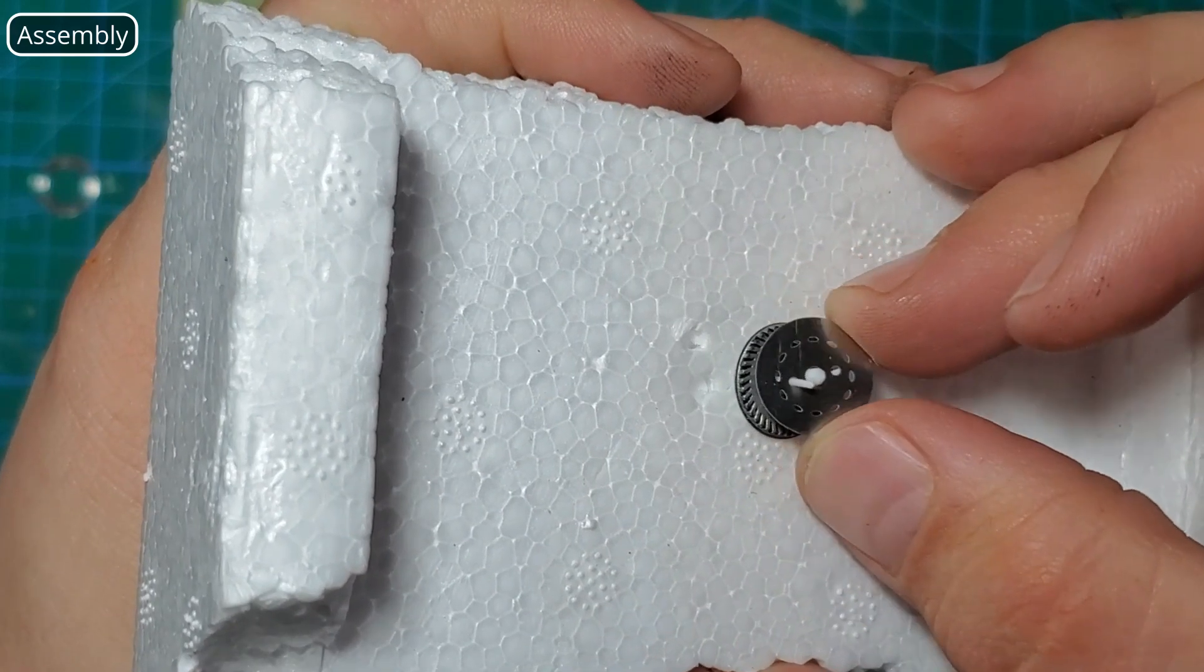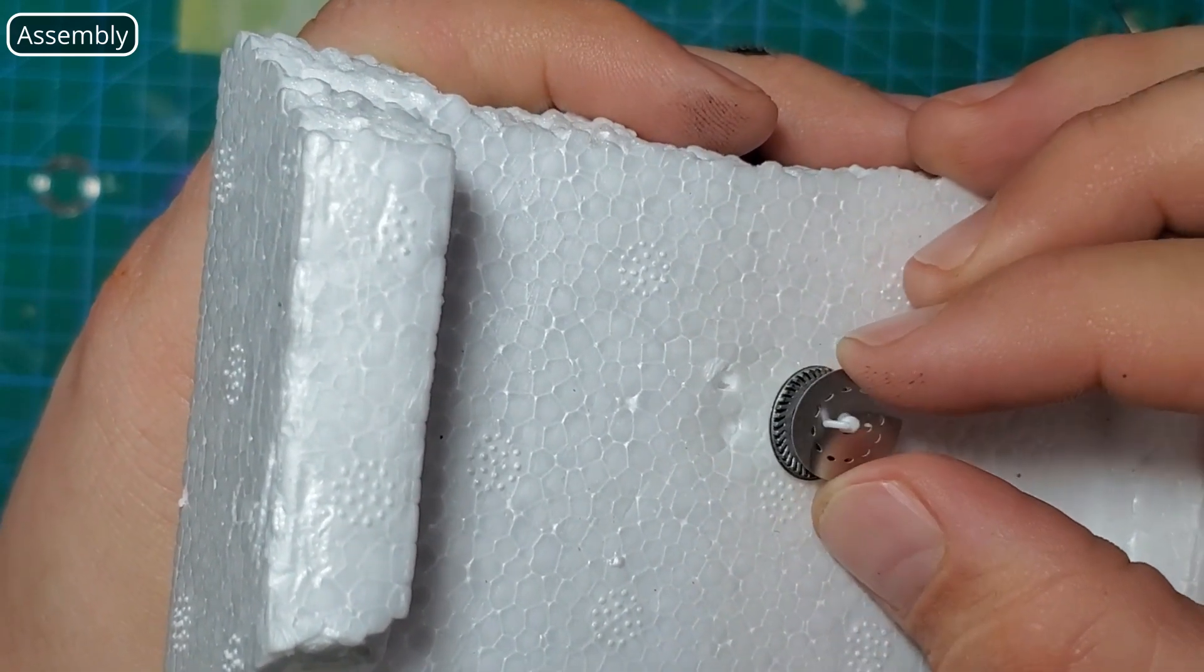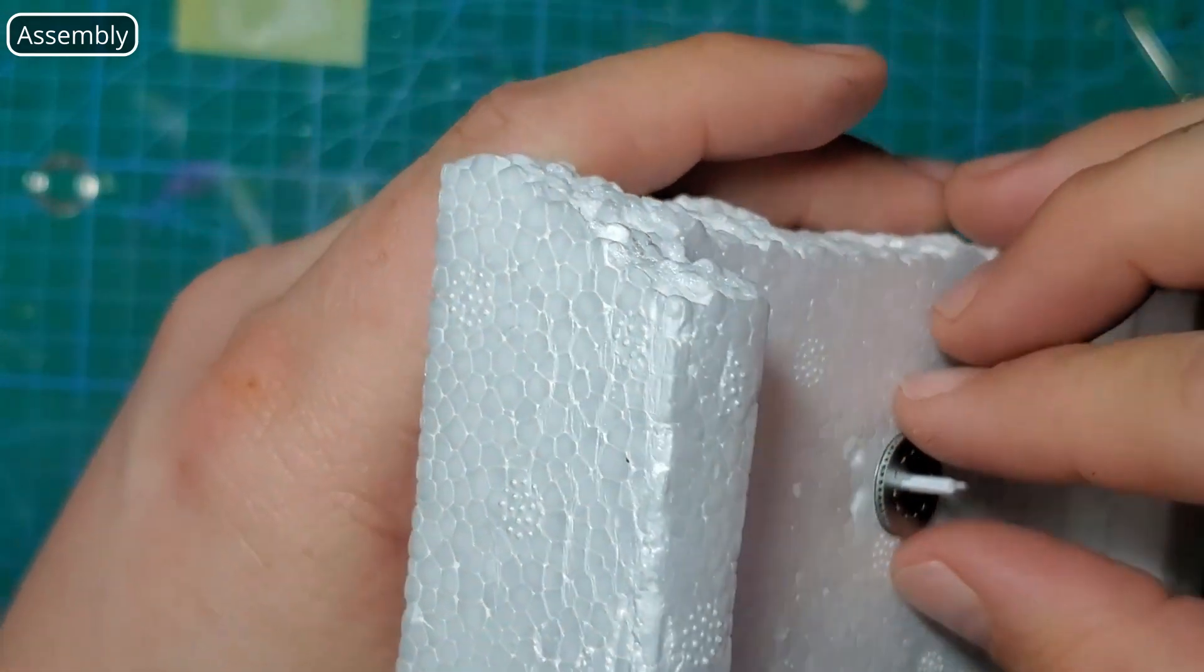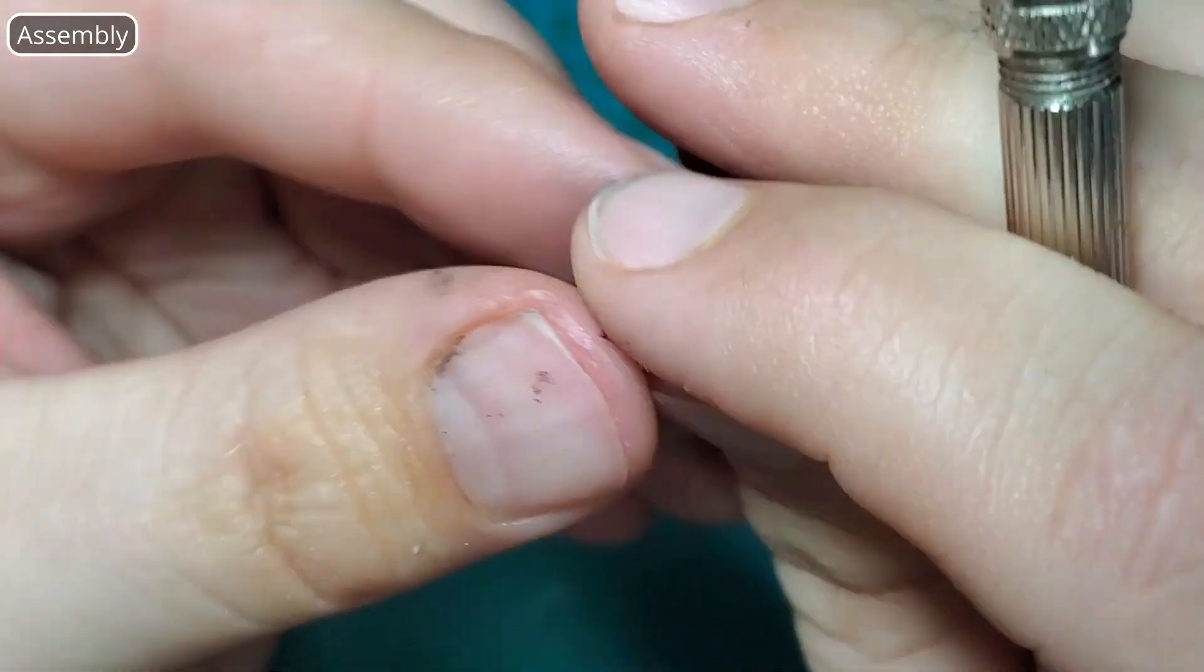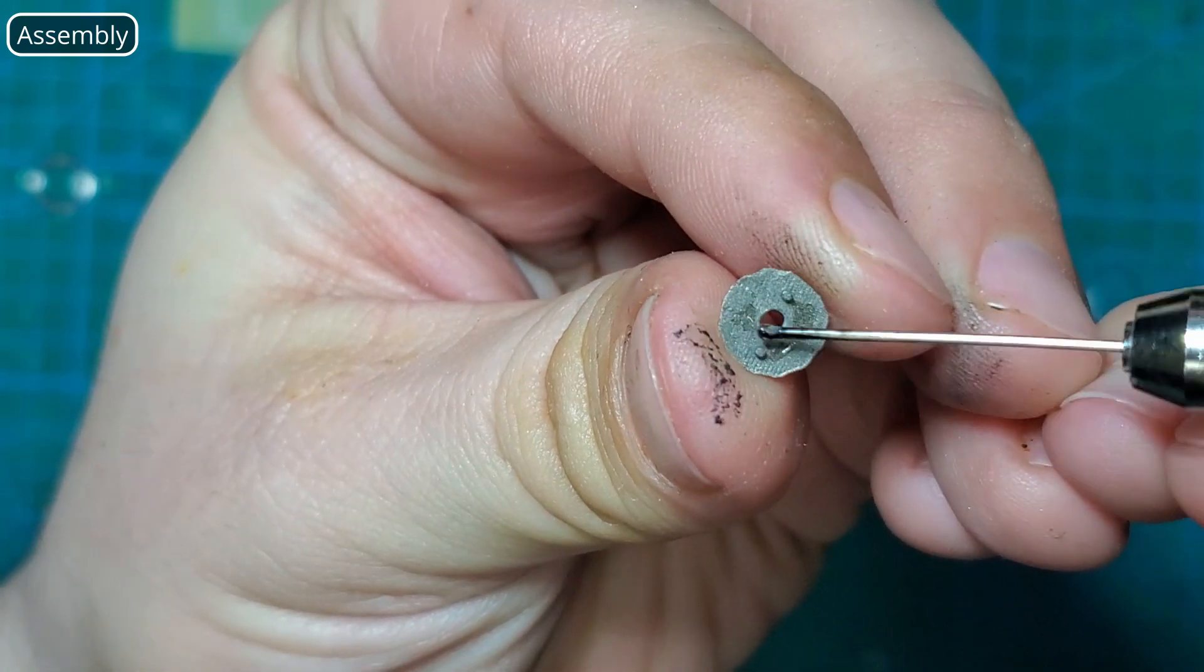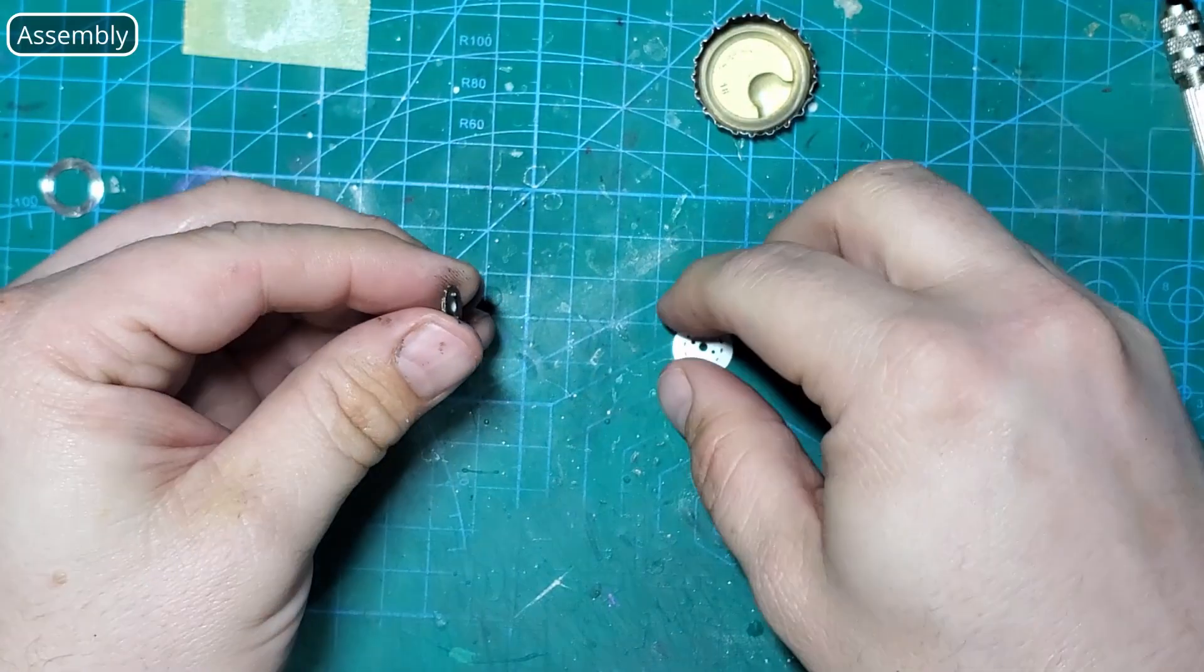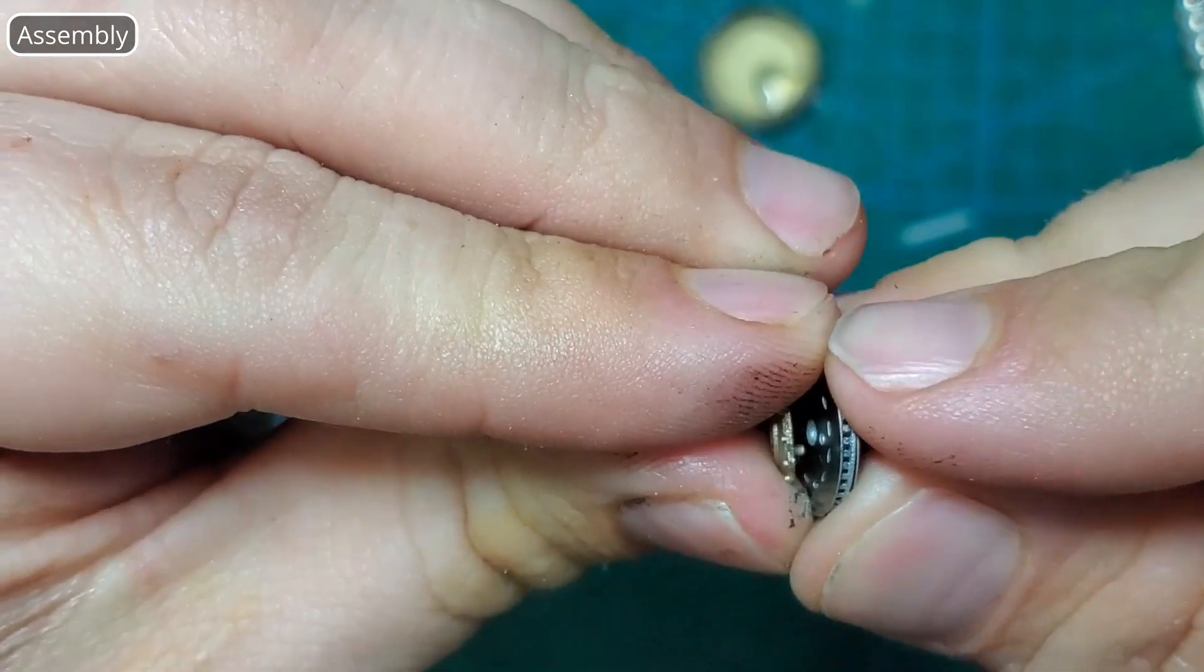Once that side's set flip it over and repeat with the other mostly solid metal disc. Now we're going to set our center hats, there's one for each disc and they go on the outside. Just put some super glue on the inside of the hat and then line those two small tabs up with the small holes in the front of the disc. Now press it in place.